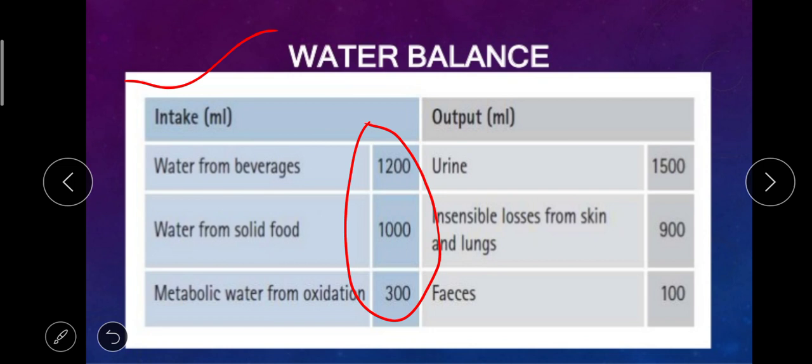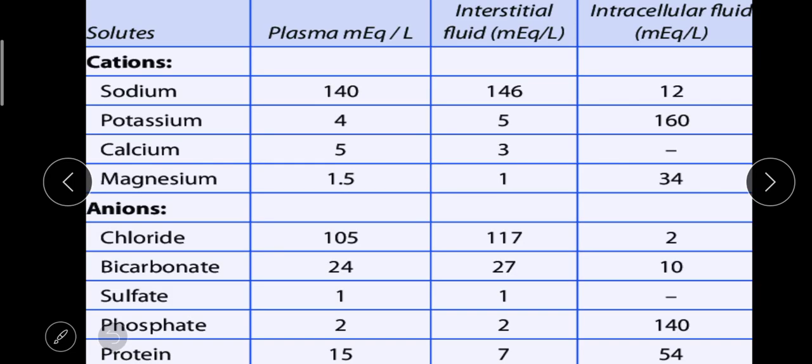Next is output, going out of the body through urine, which is 1500 ml, or through losses from the skin and lungs like sweat or when you are taking breath. Through feces it's 100 ml. So this is the chart showing how much water you are drinking per day and how much water is going out of your body per day, everything in milliliters.